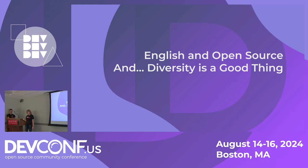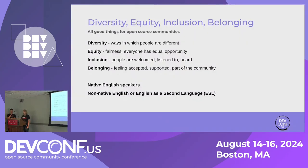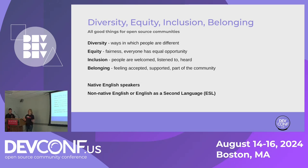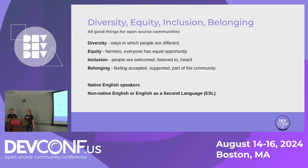Diversity is a fact and a really good thing in open source communities. We want representation from a wide variety of types of diversity. I put some definitions of DEIB up here in case you're not familiar with those terms. Open source communities are really into equity, inclusion, feeling accepted and supported — and those are all keys to success.